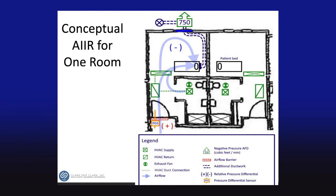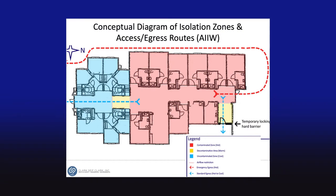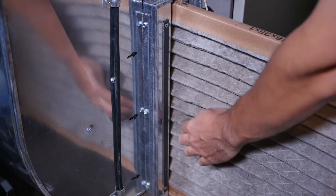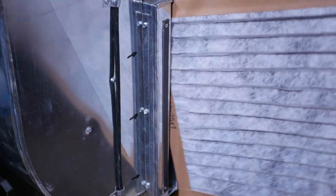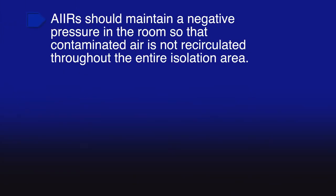Each patient room should be set up as an airborne infection isolation room — also known as negative pressure isolation rooms. These are single occupancy patient care rooms used to isolate people with suspected or confirmed airborne infectious disease. Groups of AIIRs can exist adjacent to one another to create airborne infection isolation wings. Environmental factors such as airflow are controlled in these AIIRs to minimize transmission of infectious agents, usually transmitted by droplet nuclei associated with coughing or aerosolization of contaminated fluids.